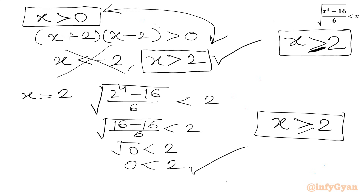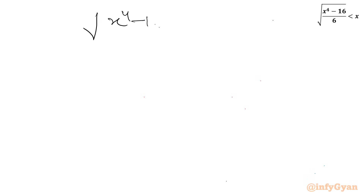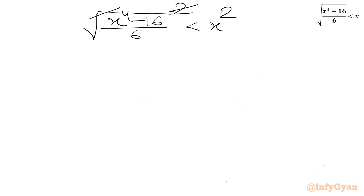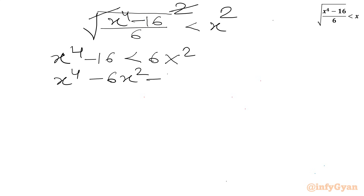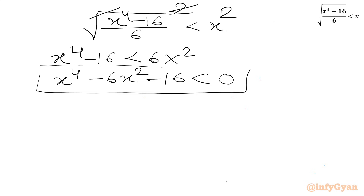Now we solve the original inequality: square root of (x⁴ minus 16) over 6 < x. Squaring both sides removes the square root, giving us x⁴ minus 16 < 6x². Bringing all terms to the left-hand side: x⁴ minus 6x² minus 16 < 0. We need to factor this quadratic in x².